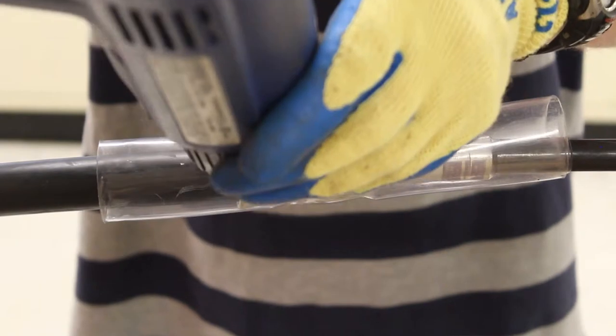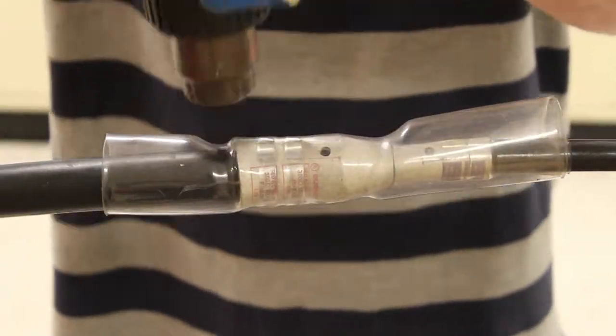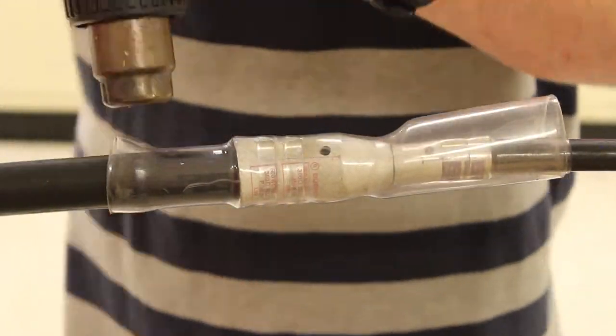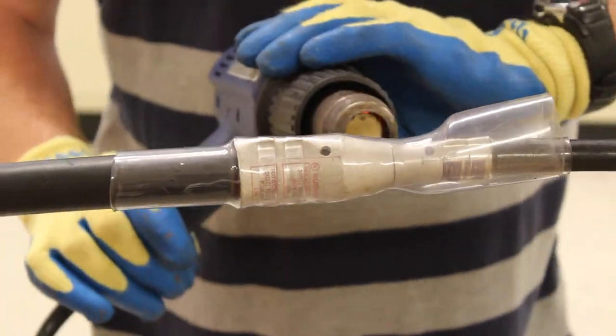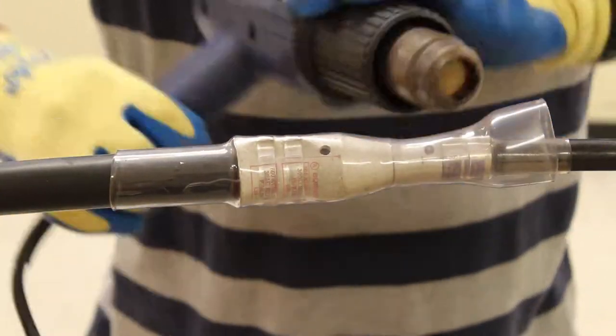For heating temperature, use a low temperature heat shrink and a low wattage gun or the low settings on a multiple wattage gun. For these clear tubing installations, 135 degrees Celsius, 275 degrees Fahrenheit is the max.